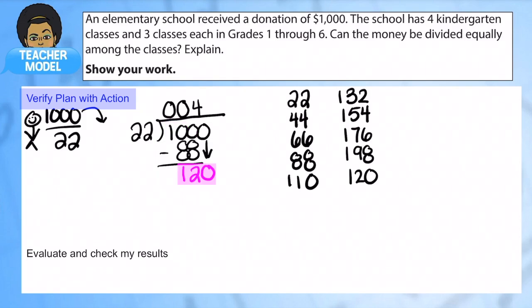And how many 22s go into 120? I'll look at my list again. 1, 2, 3, 4, 5. Can't do 6. So 5. And that's 110. And I have 10 left over.